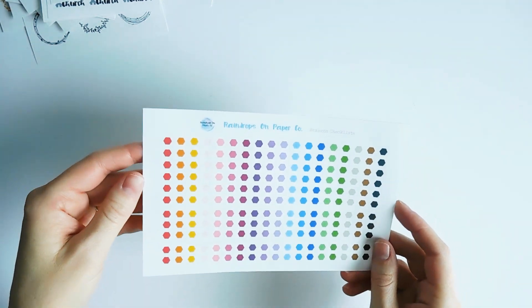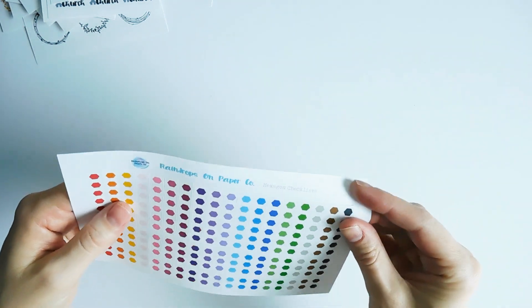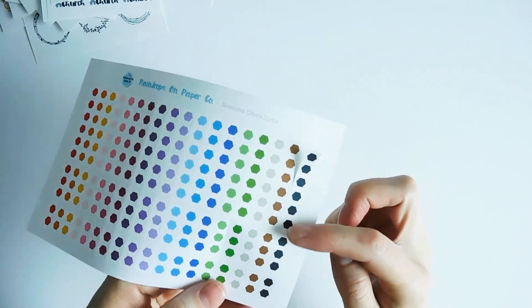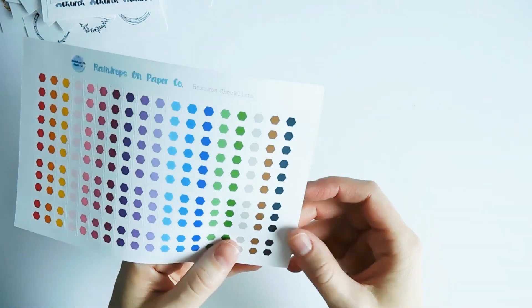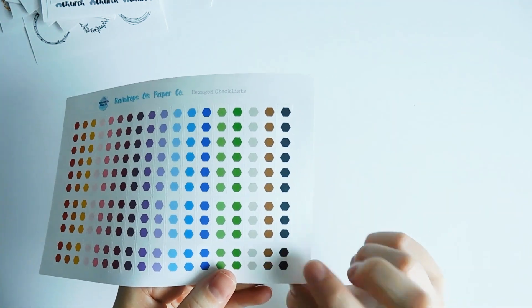Here is another sheet that I'm working on the listing for. These are called hexagon checklists and you have three different sizes here. So this one is a full checklist. You've got six hexagons there for bullet points. And then you have one with just three and then one with just two.